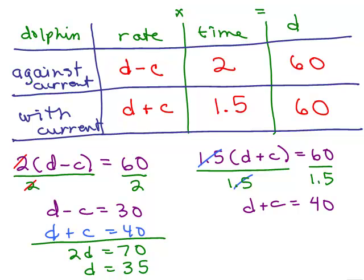You could probably do that in your head if you put d plus c equals 40 and if d is 35, hopefully you'll see that c's got to be 5, right?